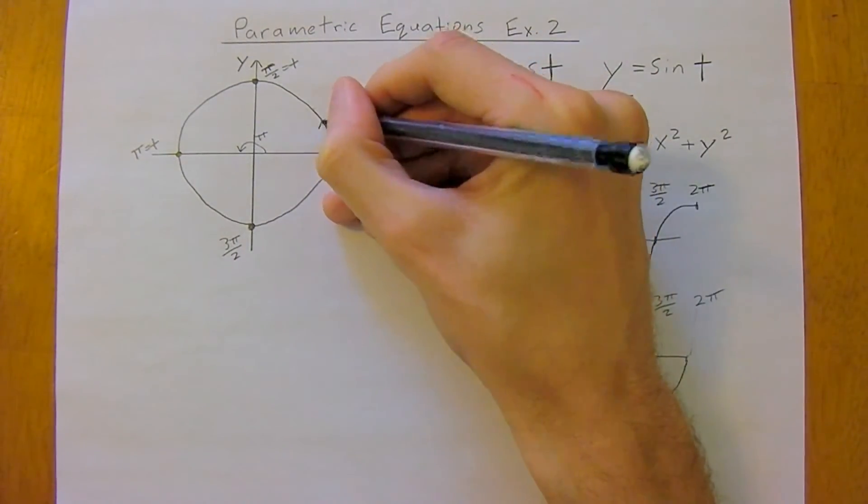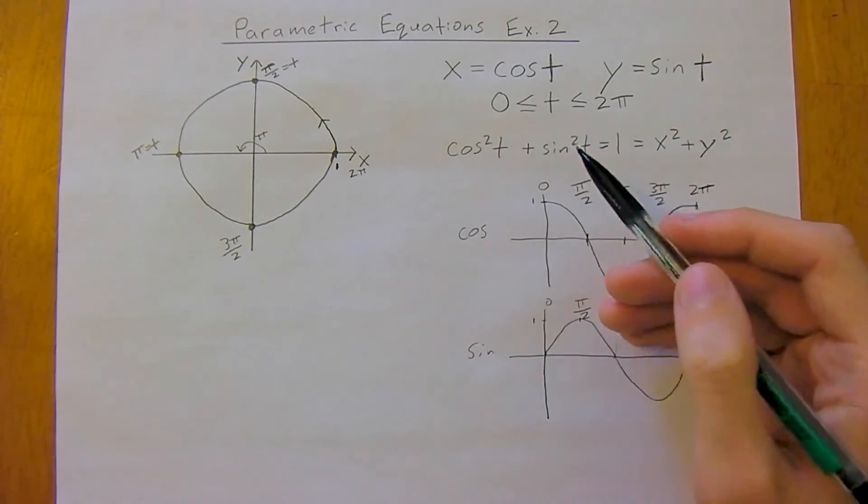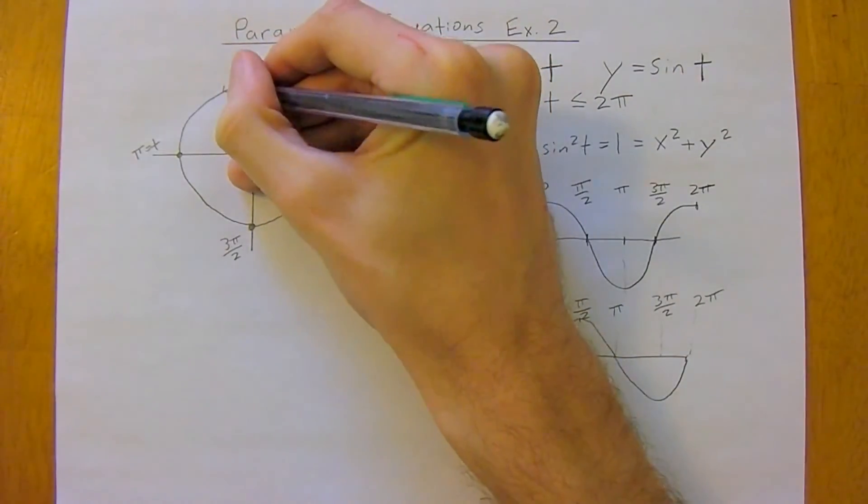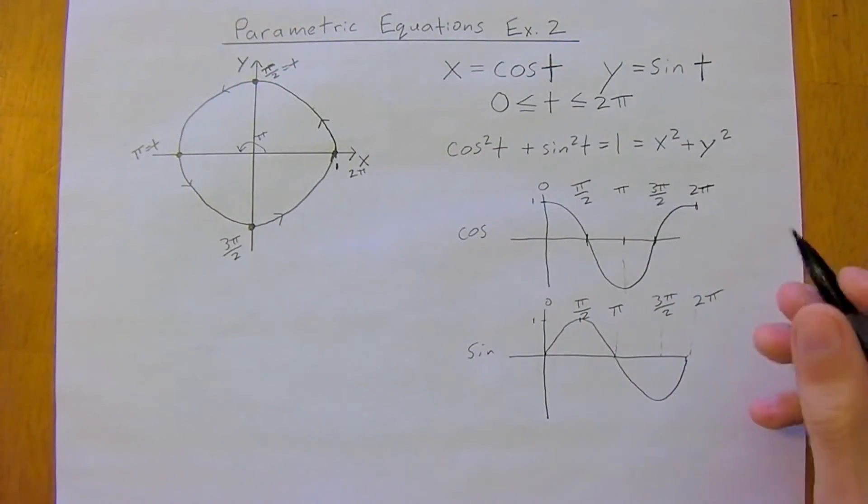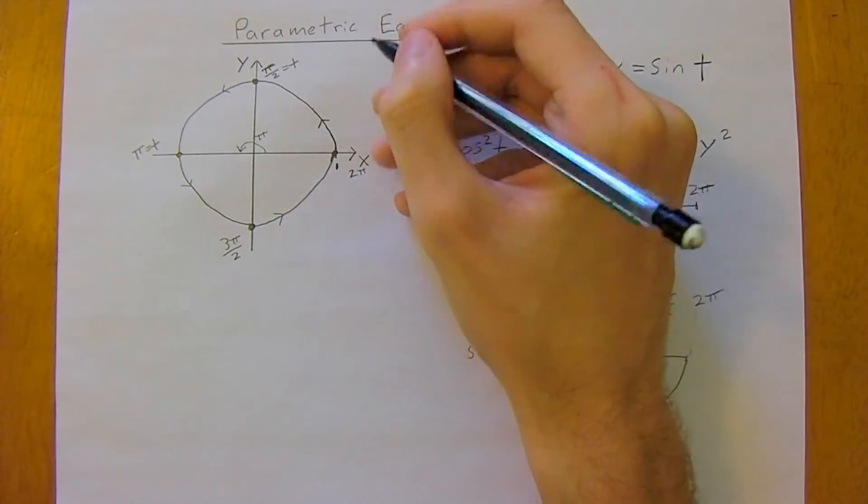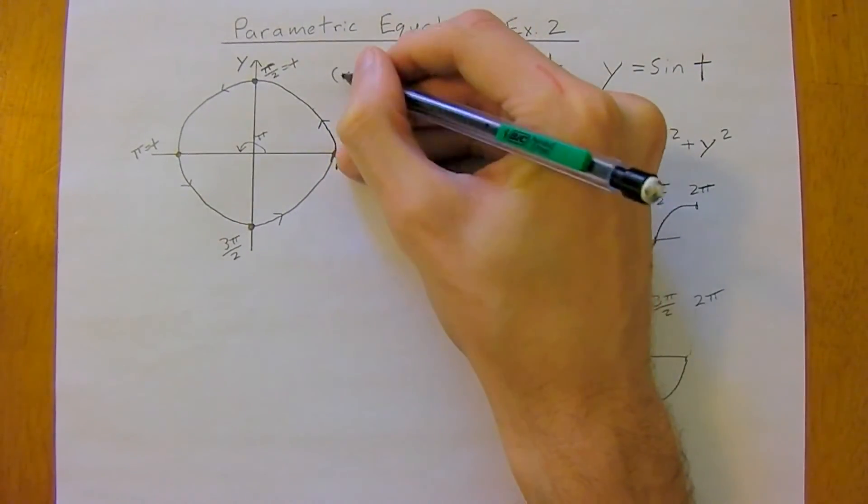And so this is a direction, keep in mind, because parametric equations give us a direction and they tell us a time. So it's just going to be traced out this way. And so thus, the points, so point x, y moves in a unit circle.